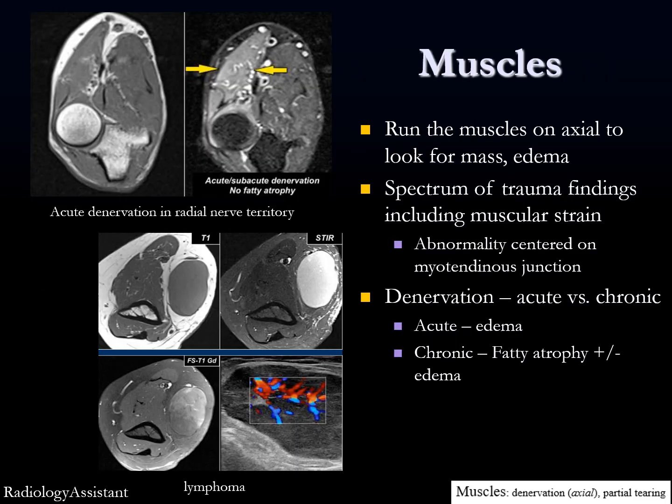For muscles, do a run through to look for any abnormalities — edema, masses associated with muscles, myotendinous strains at the myotendinous junction, and denervation changes, either acute or chronic fatty atrophy — all findings you can potentially make by running through the images with attention to the muscles.